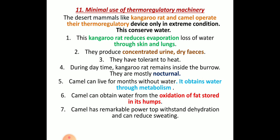The camel can live for months without water because it stores water in its hump region. It also obtains water from the oxidation of fat stored in the hump, and can store water during metabolism. Camels have great power to withstand dehydration and can reduce sweating because they lack sweat glands.